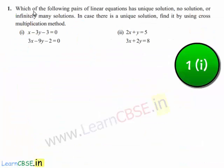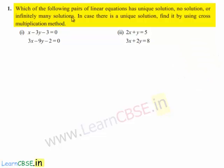Coming to the first problem: which of the following pairs of linear equations has a unique solution, no solution, or infinitely many solutions? In case there is a unique solution, find it by using the cross multiplication method. In this problem we are given two bits each consisting of a set of linear equations. So before finding out the solutions, let us see some of the conditions.